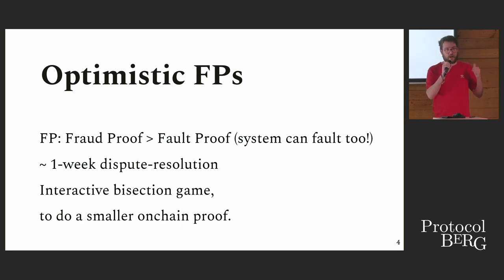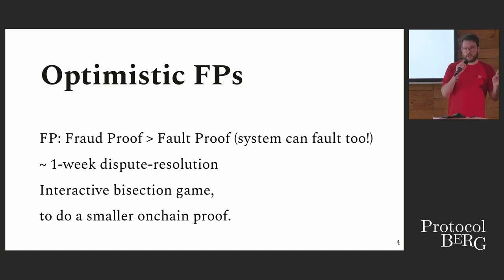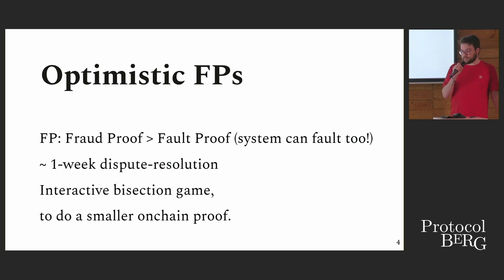The fault proof game is interactive, though there are non-interactive versions. Software rollups in other alternative ecosystems like Celestia and others use non-interactive proofs. The difference is that you can verify computation by repeating all of it, or you can try to minimize the work, which is great for on-chain use cases like on Ethereum. It enables a smaller on-chain proof if you do it interactively.